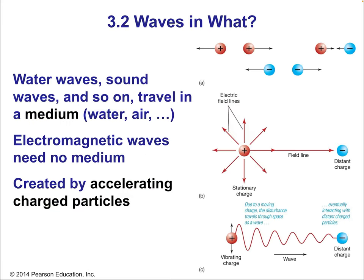So why is light a wave? What makes light a wave? Water waves, sound waves, and so on travel in a medium — they need a medium like water or air. Earthquakes travel through the ground. They can't travel through a vacuum. But electromagnetic waves are completely separate from that — they're a totally different type of physical phenomenon. It doesn't need a medium; it's what's called a self-propagating wave.